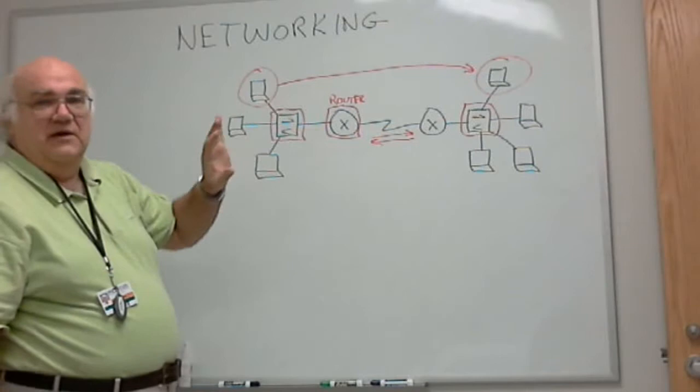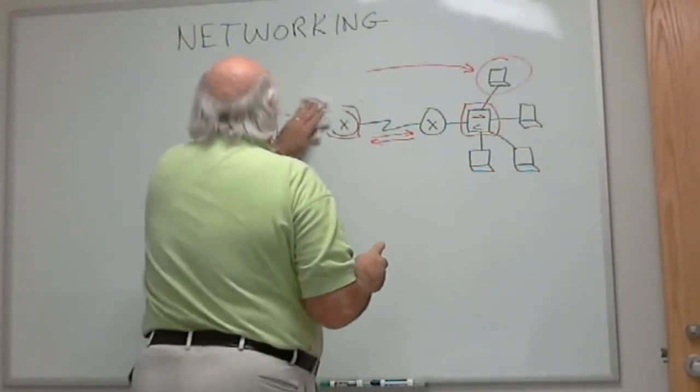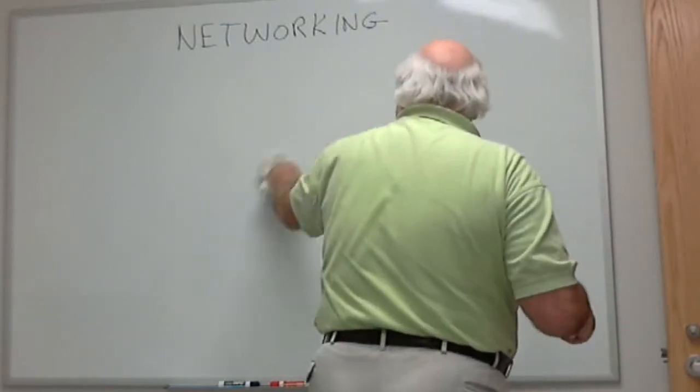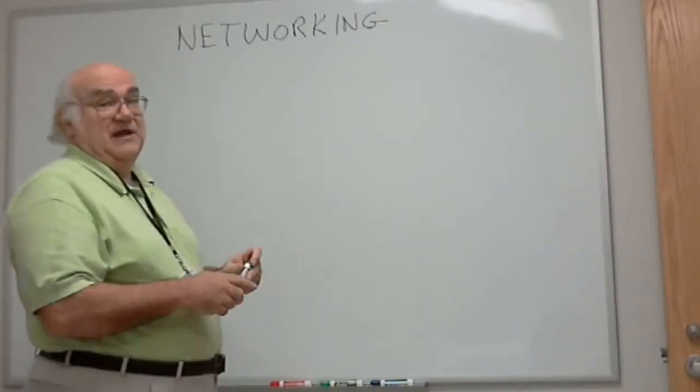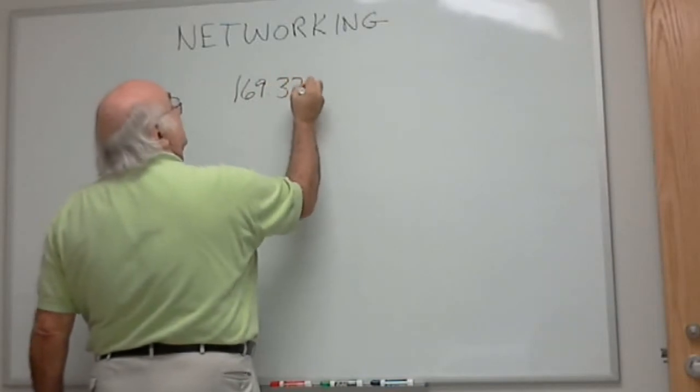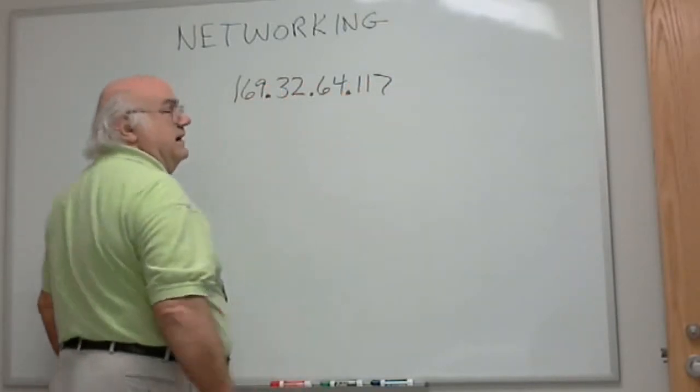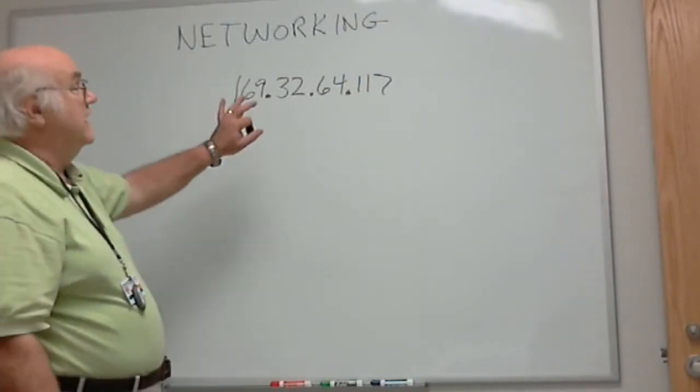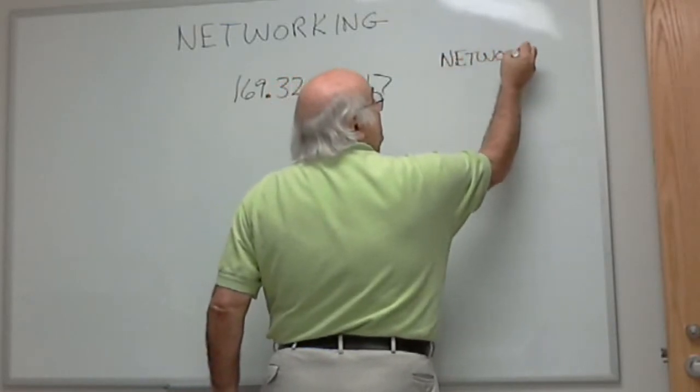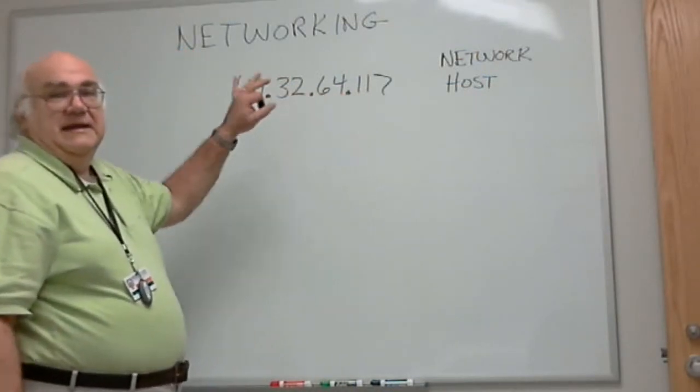All of our devices on the internet have a unique address. Every device has an address that is unique from any other address. That is the only way this thing can work. Let's take that information and look at the addressing scheme. An address looks like this in dotted decimal - 162.32.64.117. This is a hierarchical addressing scheme. Part of this address refers to a network address, and part of it refers to an individual host. So we divide the network into two pieces: network and host.